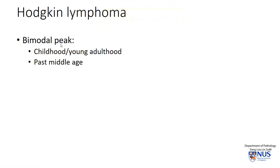Hodgkin lymphoma has a bimodal peak in terms of age group. One peak occurs in childhood or in young adulthood — so teenagers, young adults and children can also get this condition. The other peak is towards the elderly age group, perhaps in the mid-50s and above. It tends to involve or spread according to contiguous sites. Cervical lymph nodes are very frequently involved, as are mediastinal lymph nodes such as seen in this case. They don't tend to spread discontinuously; they move from one anatomical site to an adjacent or close-by anatomical site.